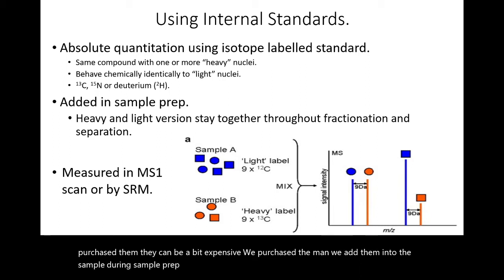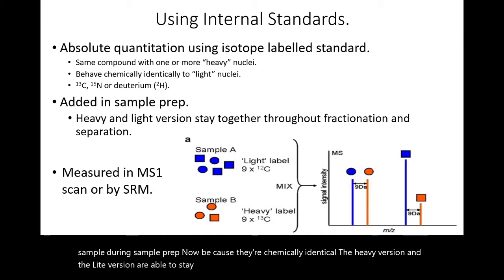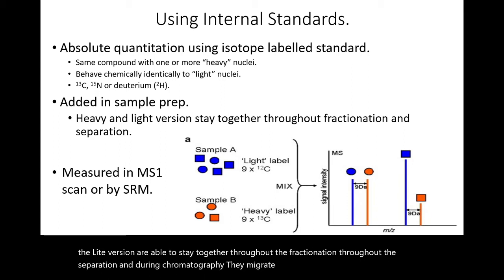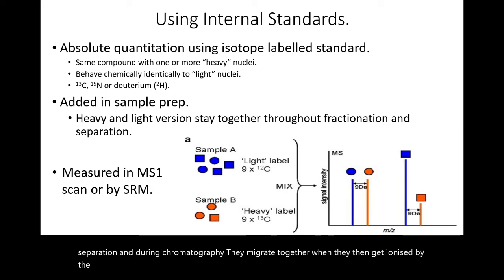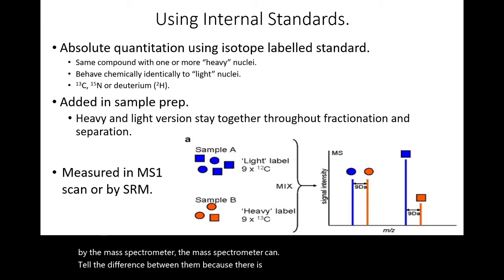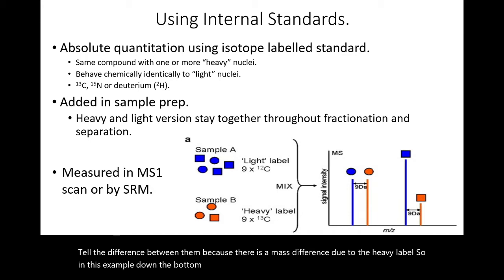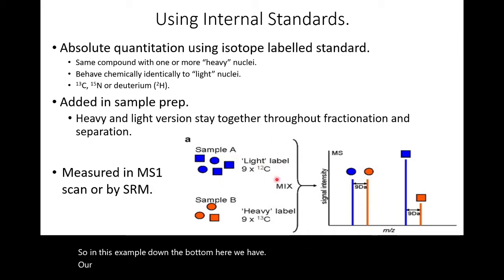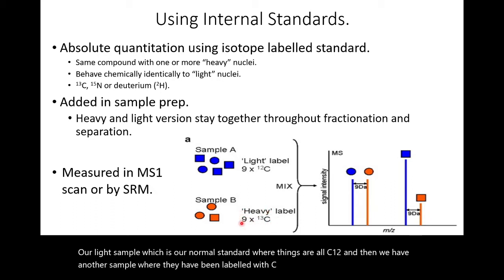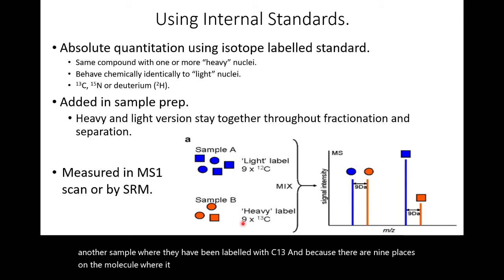Because they're chemically identical, the heavy version and the light version are able to stay together throughout the fractionation, throughout the separation, and during chromatography they migrate together. When they get ionized by the mass spectrometer, it can tell the difference between them because there is a mass difference due to the heavy label. In this example, we have our light sample where things are all C12, and another sample labeled with C13. Because there are nine places on the molecule where this can be added, we get a nine Dalton difference in the MS1 scan.